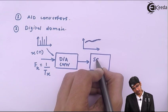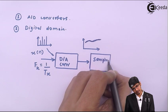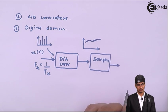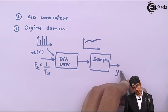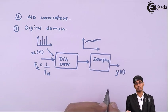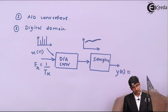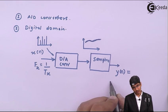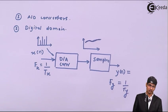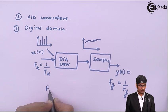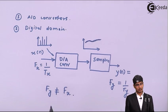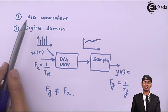Then we sample it again using a sampler working at a different sampling rate. The new output y(n) will be a digital signal — a discrete signal — because sampling provides a discrete output at a rate fy, where fy equals 1 divided by Ty, and fy is not equal to fx.